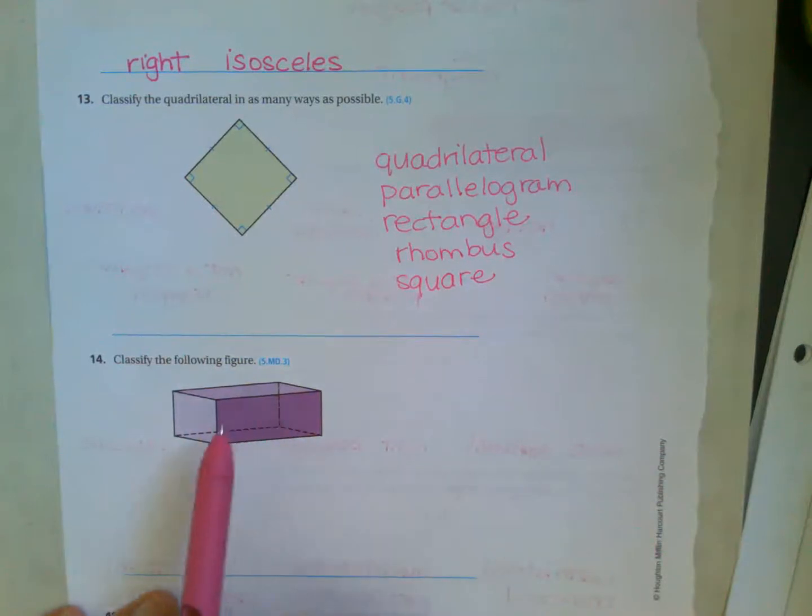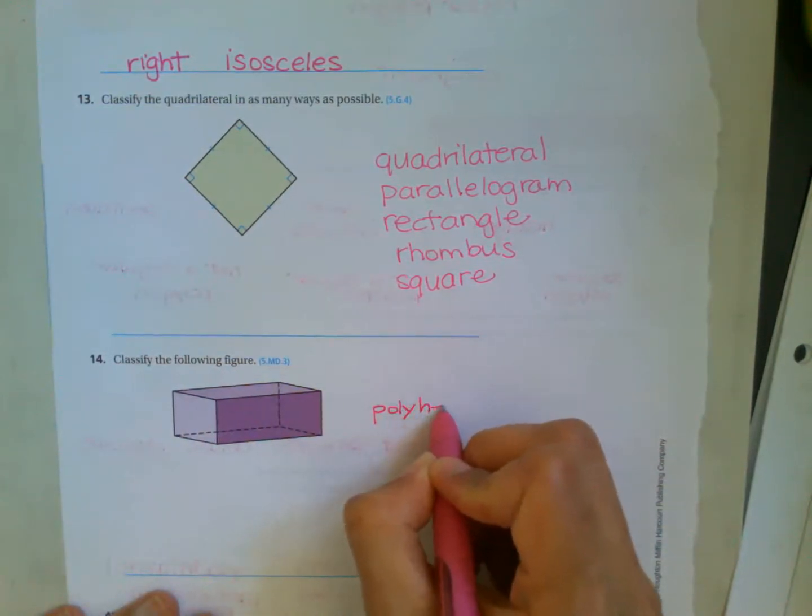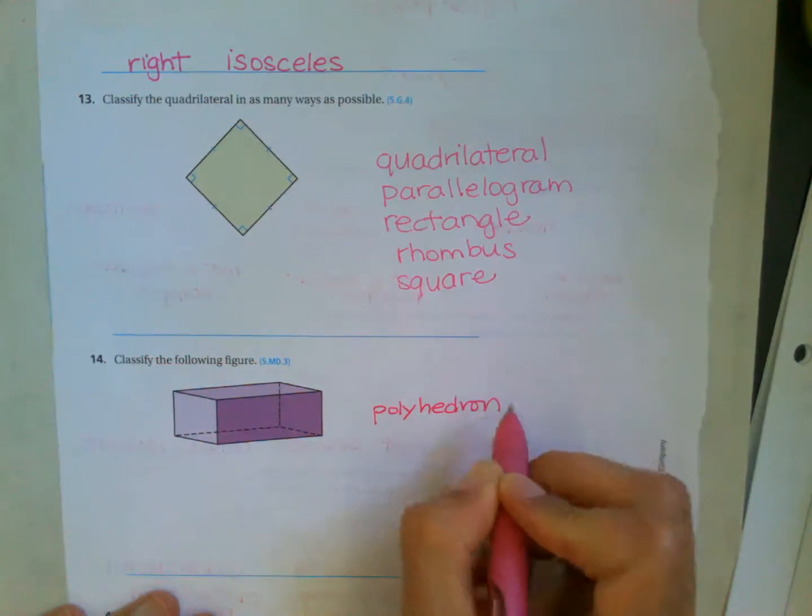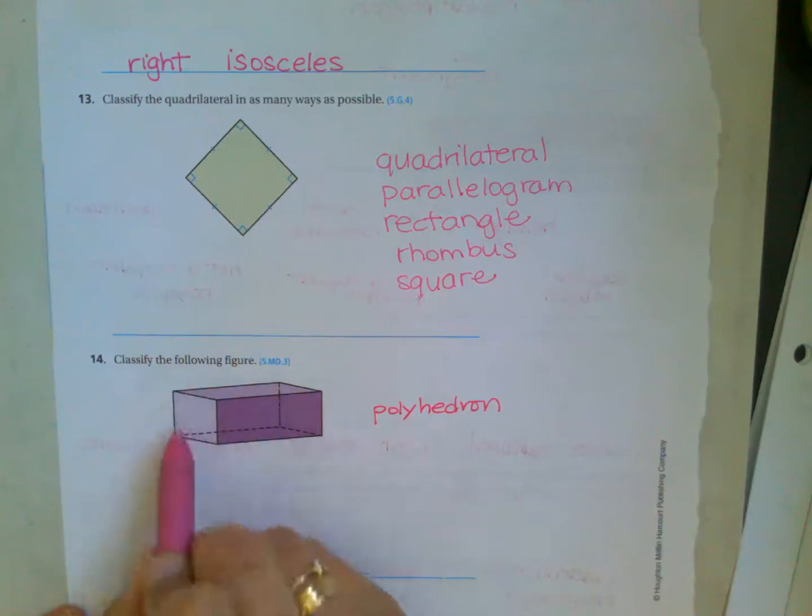Classify this solid shape. So we know it's a polyhedron, right? So what kind of polyhedron is this? It has a square, a rectangle face and rectangles on the sides and the bases. So this is a rectangular prism.